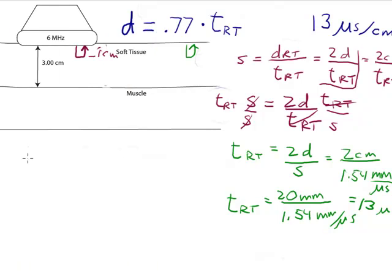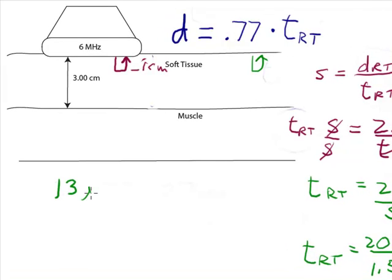The time it takes for an echo to go down 1 cm and return is equal to 13 microseconds. We can use the rule 13 microseconds per centimeter. If the reflector is 1 cm away, it's going to take 13 microseconds for the echo to return.